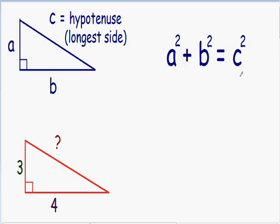The hypotenuse is just another way of saying the longest side. If you have any trouble recognizing which side is the hypotenuse, what I like to do is start at the 90-degree angle and point an arrow going the opposite way. The opposite side of the 90-degree angle is always going to be your longest side or your hypotenuse.